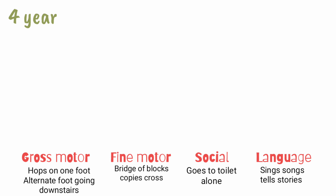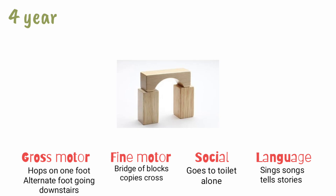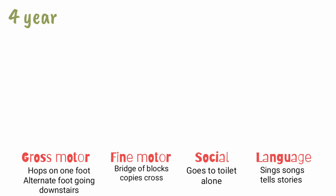The catch points from this story: under gross motor comes hops on one foot and alternate feet goes downstairs; under fine motor she can make a bridge with blocks and copies a cross; under social she can go to the toilet alone; and under language she can sing, dance, and tells stories.